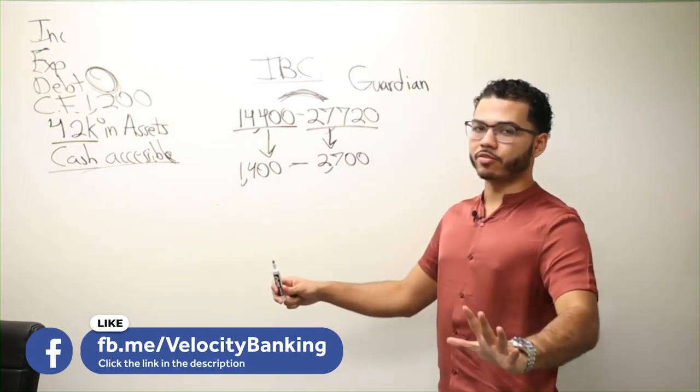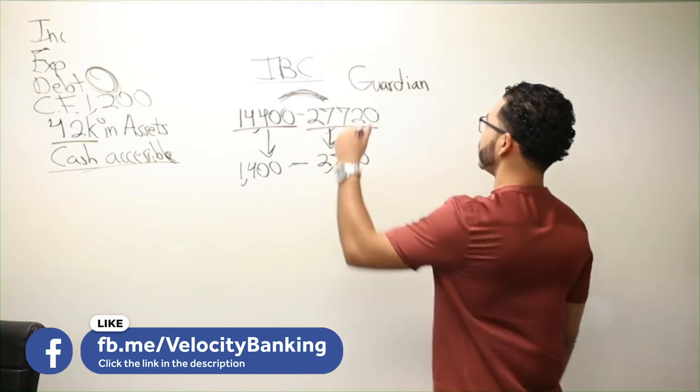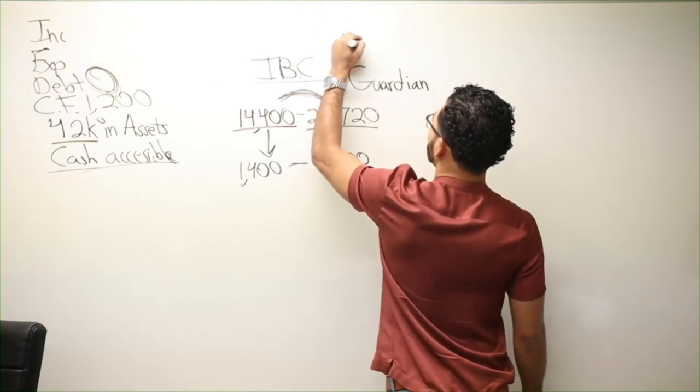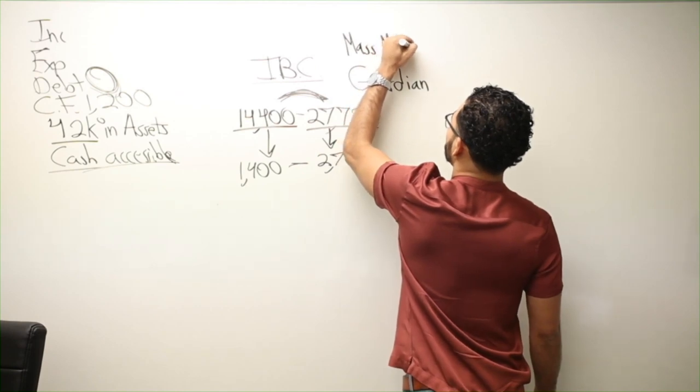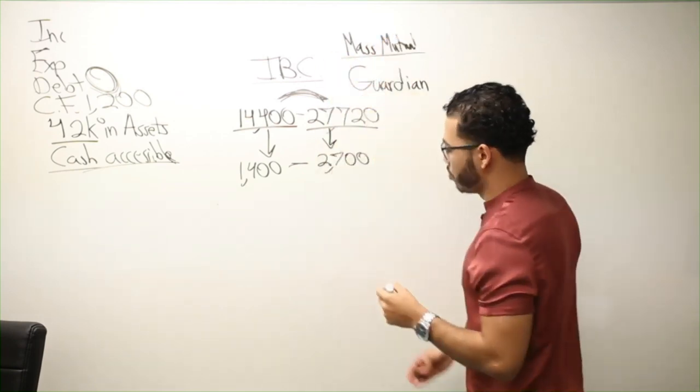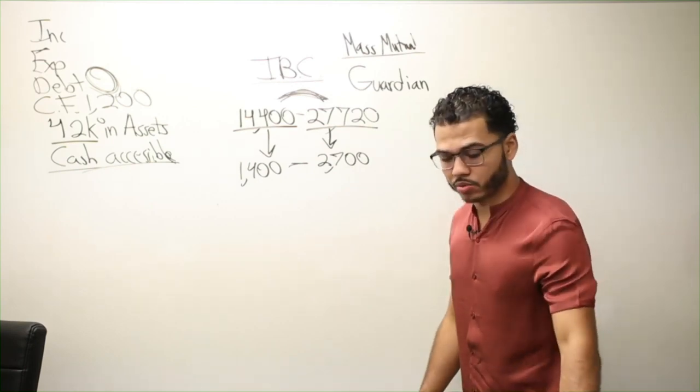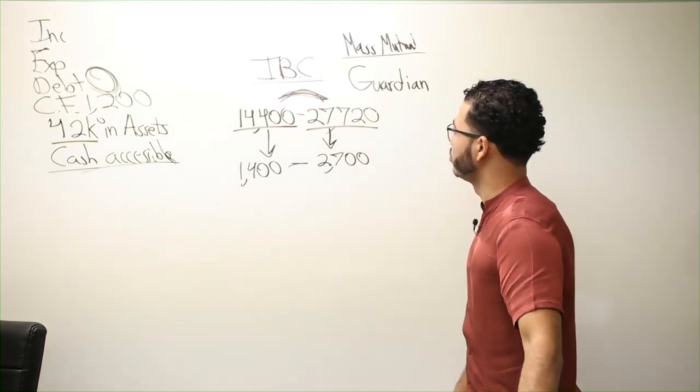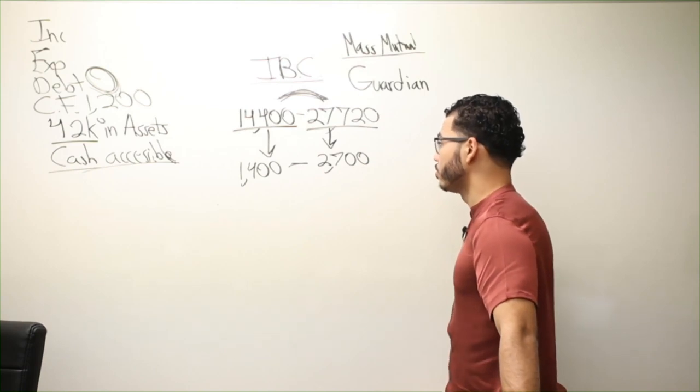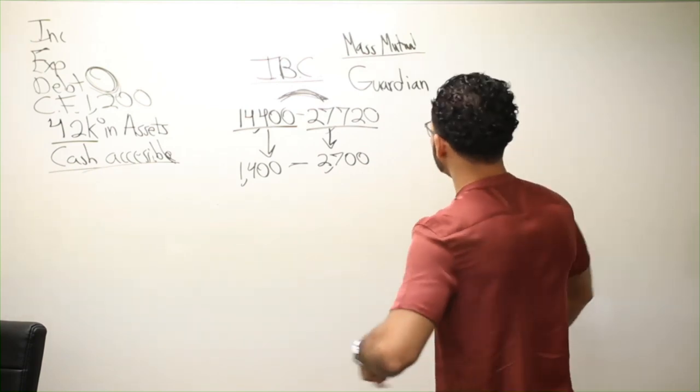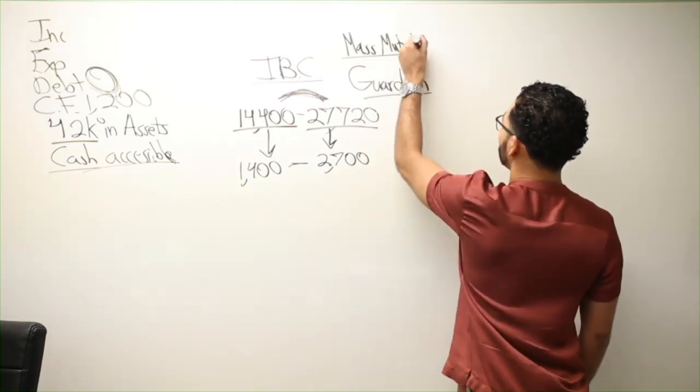If he has all the money up front, right, all of it, I think I might want to go with Mass. He's super young and Mass Mutual is crediting the highest dividend rate out of the four majors right now. So that might be very attractive.